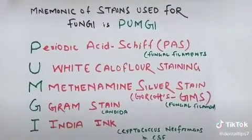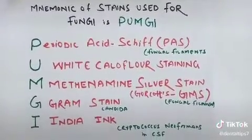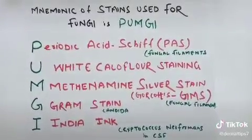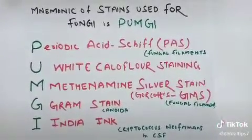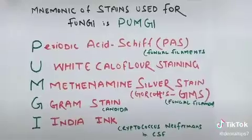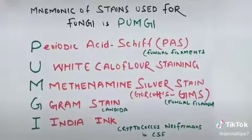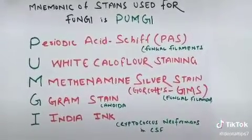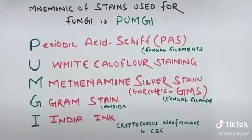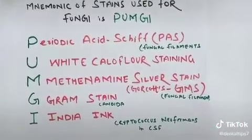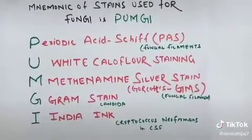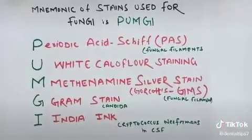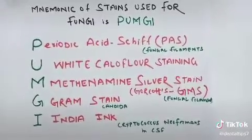PAS stains structures like yeast or hyphae. U stands for Calcofluor White staining, which is CFW. M stands for Methenamine Silver staining, that is GMS (Grocott's Methenamine Silver), also used for fungal filaments.